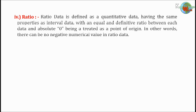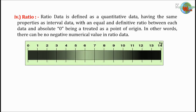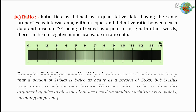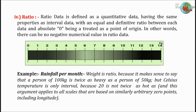Ratio data is defined as quantitative data having the same properties as interval data, with an equal and definitive ratio between each data point and absolute zero being treated as a point of origin. In other words, there can be no negative numerical value in ratio data. For example, rainfall per month — weight is ratio because it makes sense to say that a person of 100 kilograms is twice as heavy as a person of 50 kilograms. But Celsius temperature is only interval, because 20 is not twice as hot as 10. This argument applies to all scales based on similarly arbitrary zero points, including longitude.